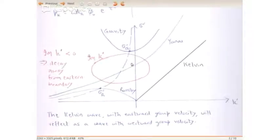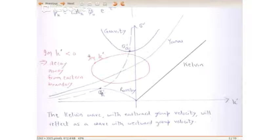This is the dispersion curve in the sigma-prime, k-prime plane. The Kelvin wave is shown here in black. We have the Yanai wave, which is not of interest now, and gravity waves, again not of interest. We have the Rossby waves — the long ones are the westward propagating ones to the right of this point sigma_r prime. In red, what is being drawn here are those imaginary wave numbers — those evanescent waves where k or k-prime is not real, it is complex. The imaginary part of k-prime here is less than 0.